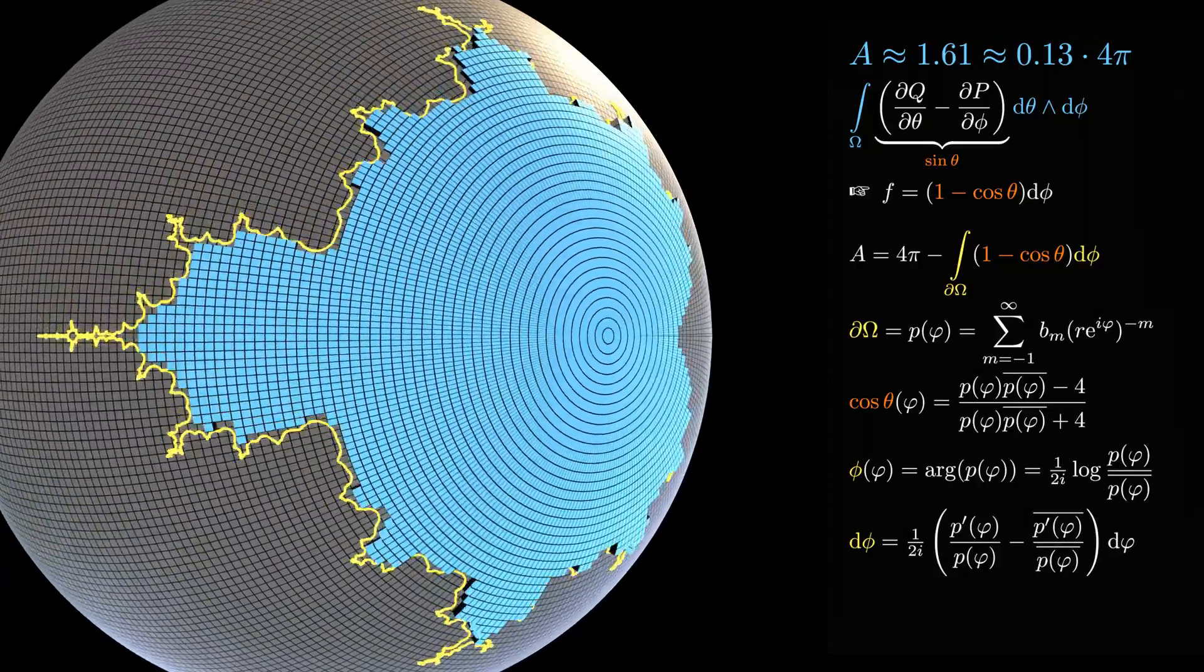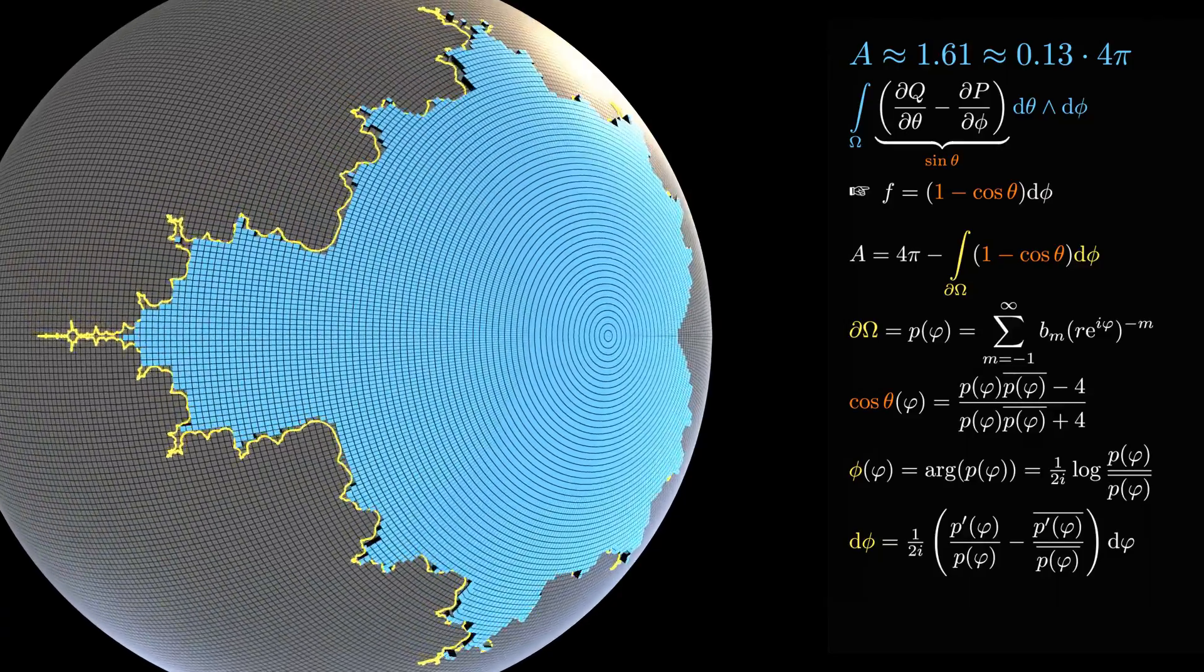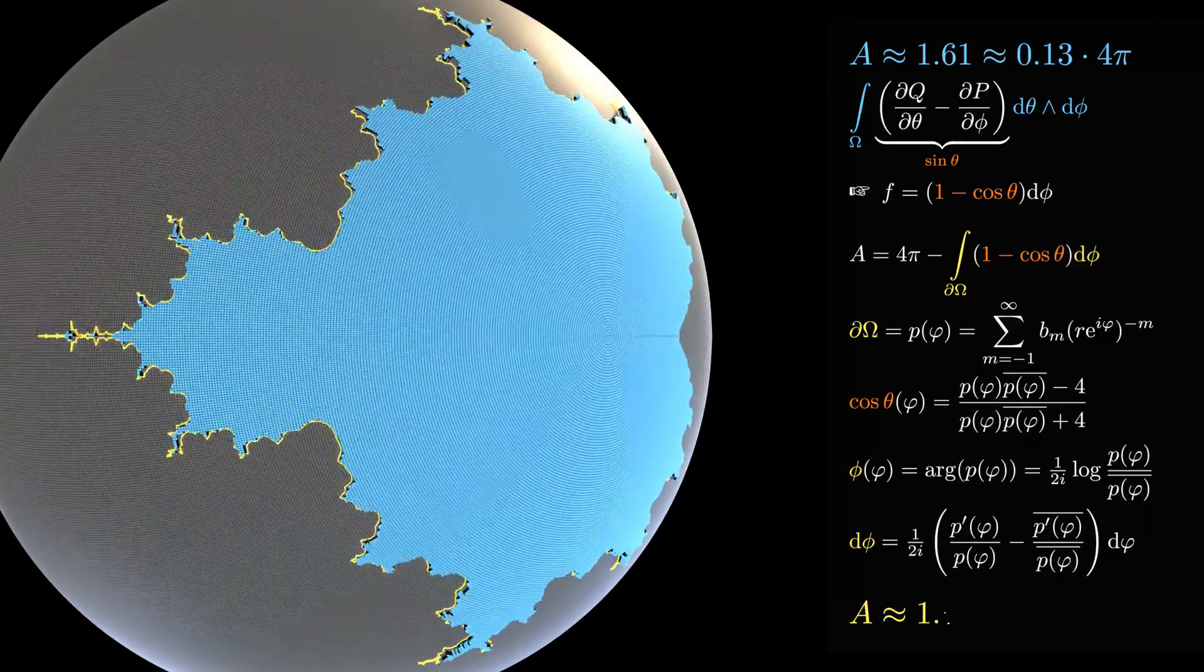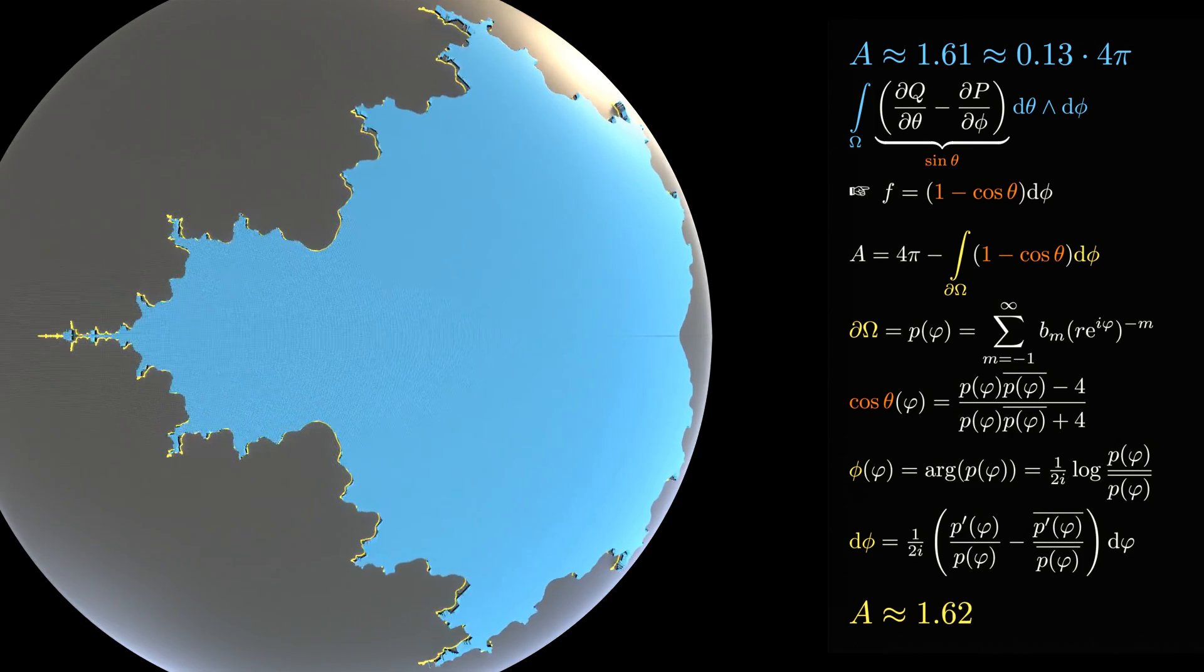Therefore, we have to live with a numerical integration for a few hundred terms, which yields a result very close to the area that we obtained from pixel counting.